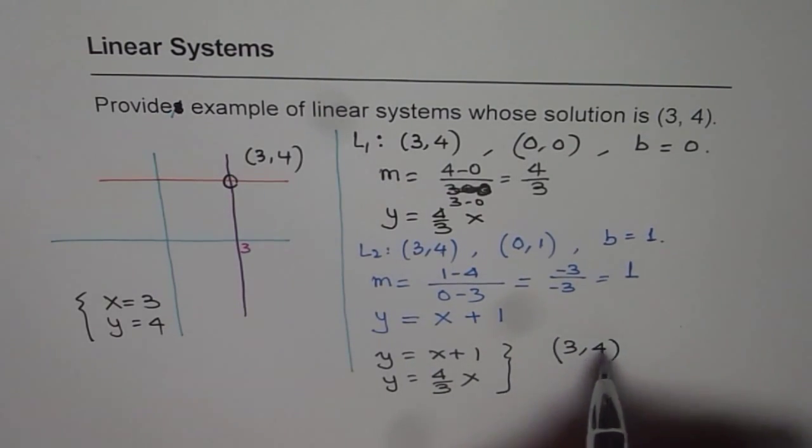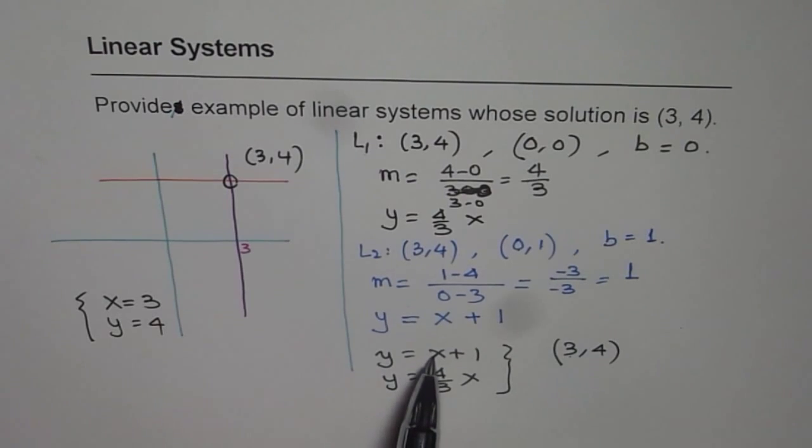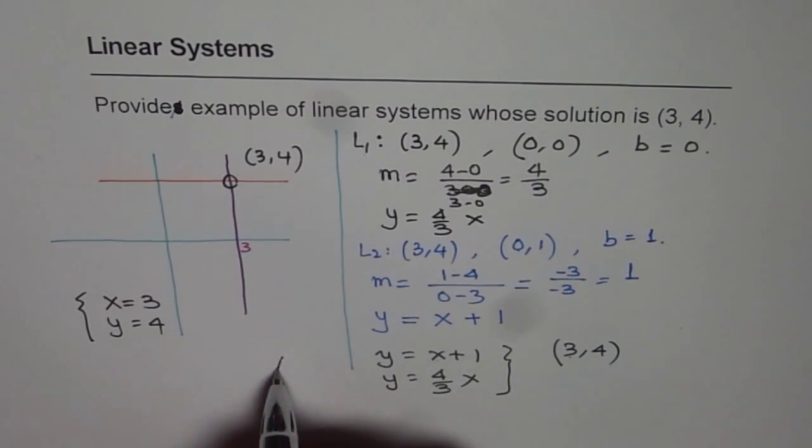You can always check your solution. If I place 3 as x value, y will be 3 plus 1, 4. Here also, if I write 3 as the x value, 4 times 3 is 12, 12 divided by 3 is 4. So we get 3 and 4. So that becomes the answer.